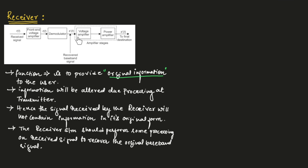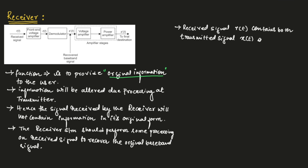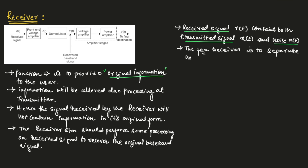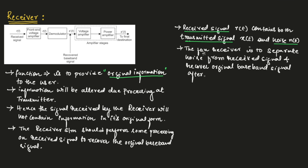The original baseband signal will be voltage amplified as well as power amplified before it is given to the final destination. The received signal R(t) contains both the transmitted signal X(t) and noise N(t). The function of the receiver is to separate noise from the received signal and then recover the original baseband signal.